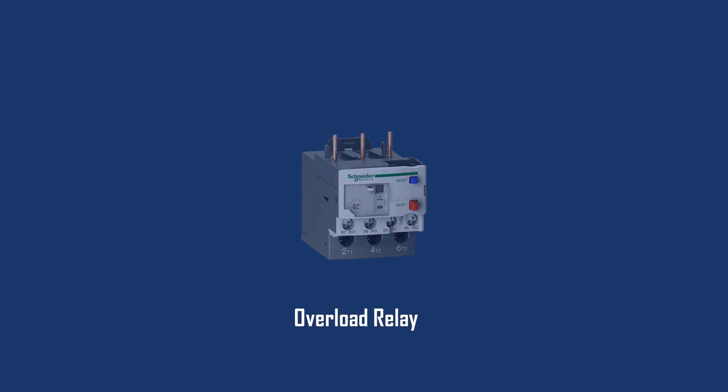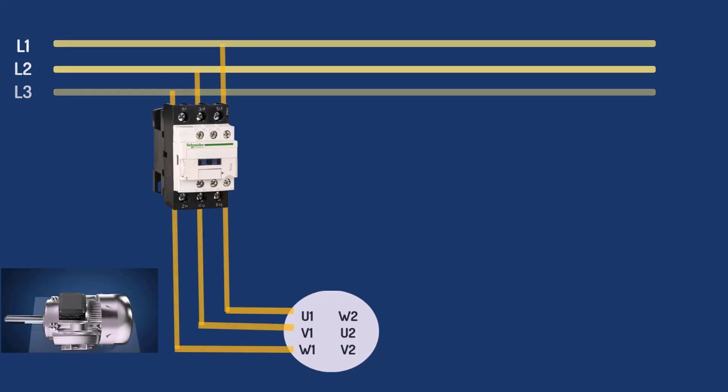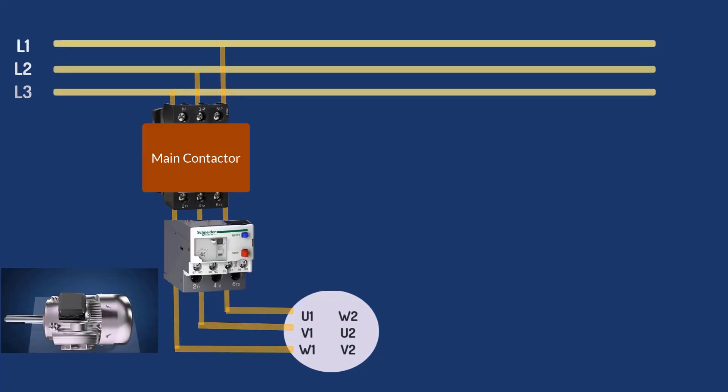Overload relay protects the motor, motor branch circuit, and motor branch circuit components from excessive heat resulting from overload conditions. They protect the motor by monitoring the current flowing in the circuit. If the current rises above a certain limit over a period of time, then the overload relay will trip. We will add an overload relay here into the circuit to provide better protection for the motor.